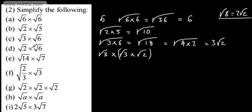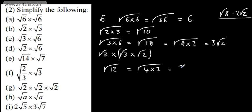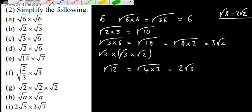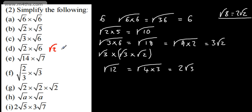So this one: we've got the root of 2 multiplied by the root of 6, which gives us the root of 2 times 6, which is the root of 12, which we can write as the root of 4 times by 3, and write that as 2 root 3. Alternatively, you could write that as root 2 times root 2 times root 3 — with root 2 times root 2 giving 2 — and that gives us 2 root 3.